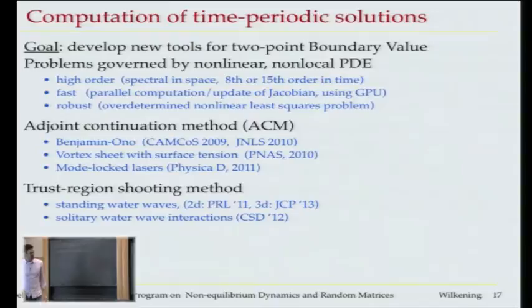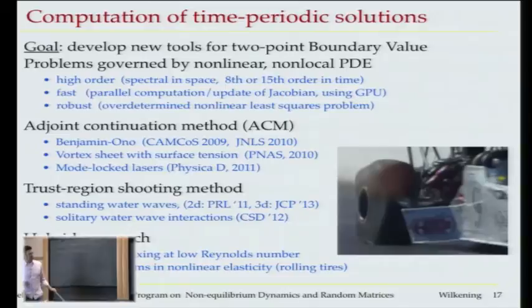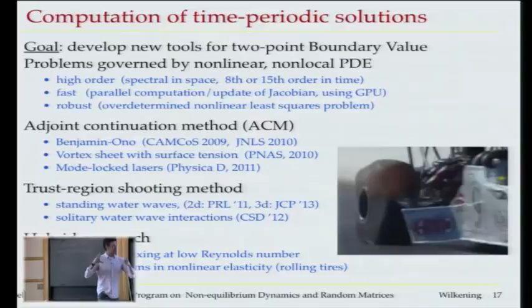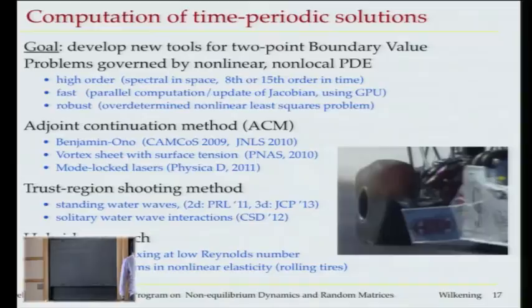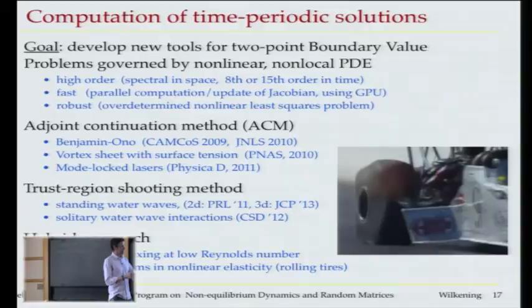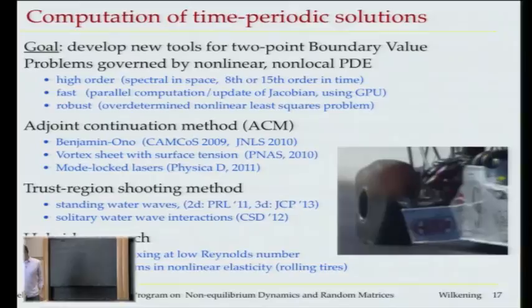The standing waves are things I was doing mostly on my own, with one student helping with some computations. We now also have a 3D water wave code. Another of my students is looking at rolling tires: take a tire and roll it at very fast speed, it will start to oscillate or go into polygonal shapes — here's a picture of a drag racer where the tire actually has five sides. All of these methods are turning out to be useful for this nonlinear elasticity problem.